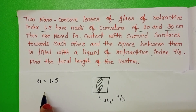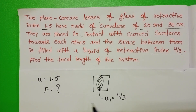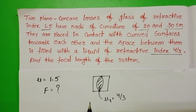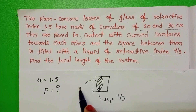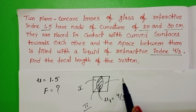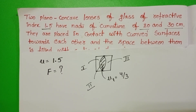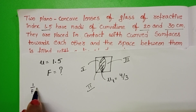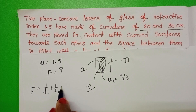We have to find the focal length of the system. The combination of the two thin plano-concave lenses behaves like three individual lenses: the first is a plano-concave lens, the second is a double convex lens, and the third is again a plano-concave lens. The formula is: 1/F = 1/F1 + 1/F2 + 1/F3.